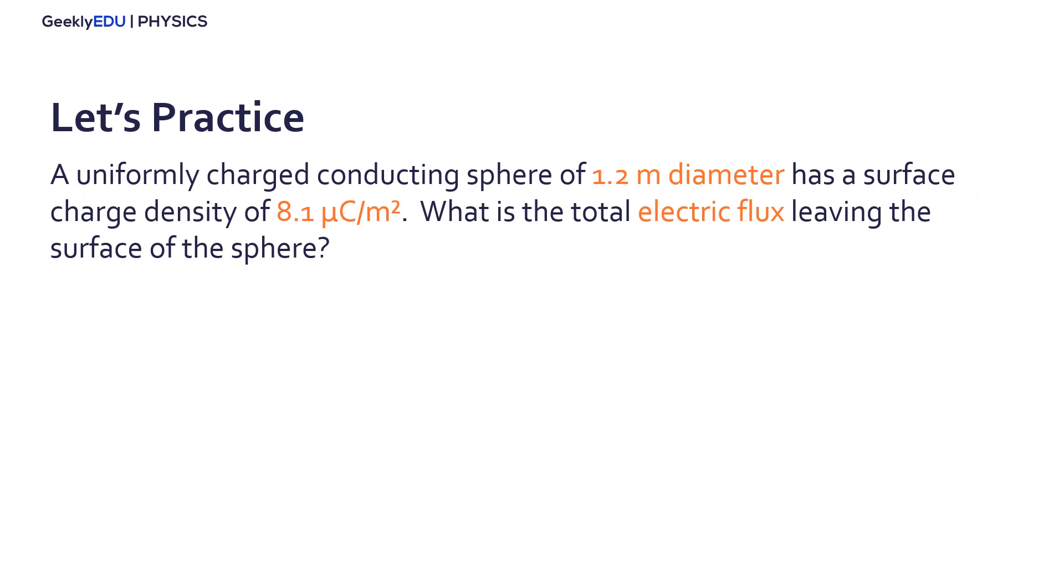Now that we learned the theory, it's time to put it to practice. So let's consider a uniformly charged conducting sphere of 1.2 m diameter, has a surface charge density of 8.1 microcoulomb per meter squared. And we want to calculate the total electric flux leaving the surface of the sphere.